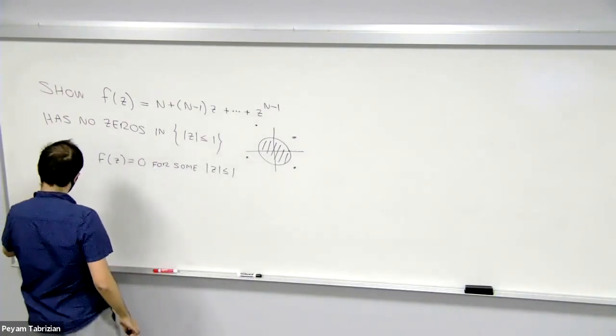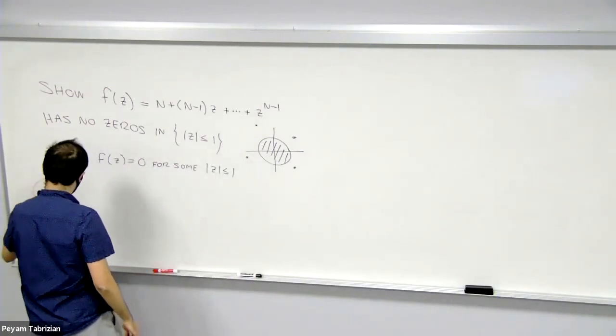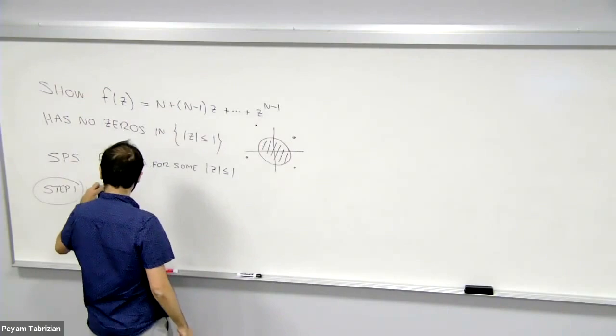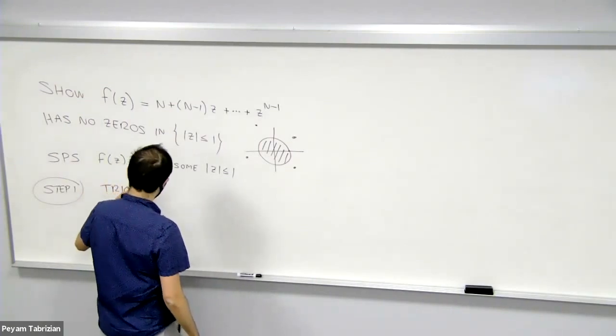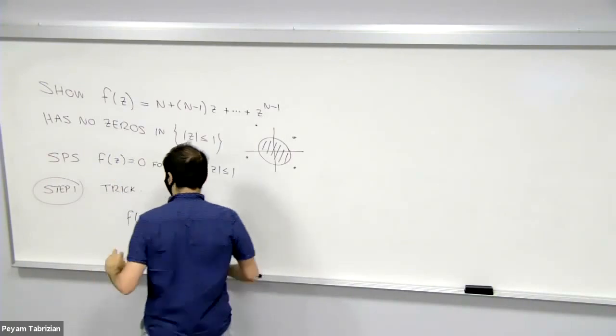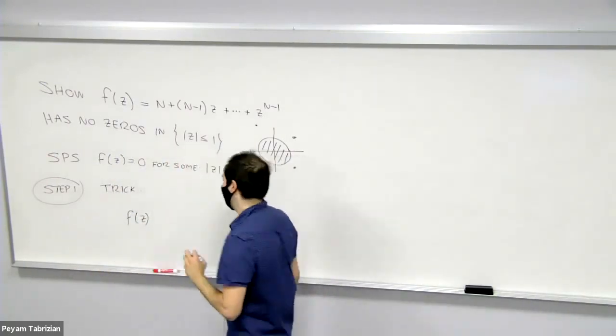So step one, clever trick: take f(z) and multiply this by 1 - z.